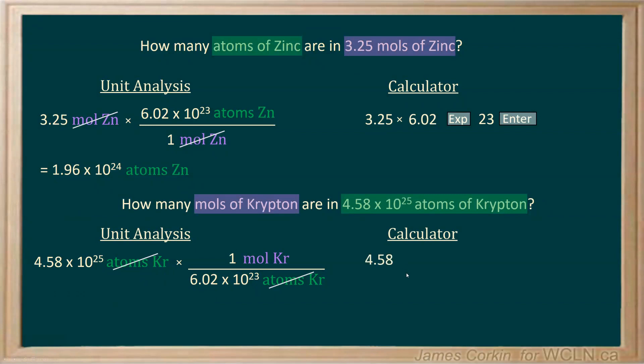So in my calculator, 4.58, exponent button 25. In this case, because the Avogadro's is on the bottom of my conversion fraction, instead of multiplying, I'm dividing. Dividing by 6.02, exponent button 23. And that will give you an answer of 76.1. Again, be sure to write your units. Moles of krypton.